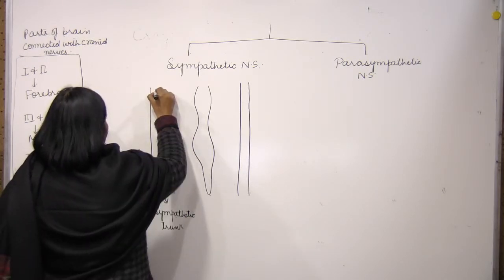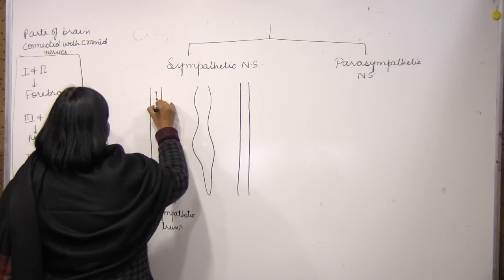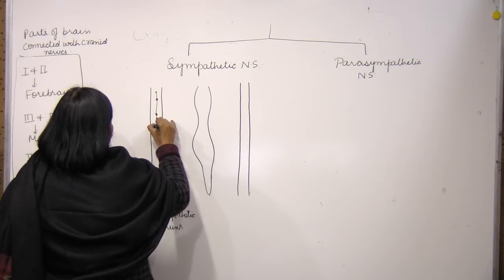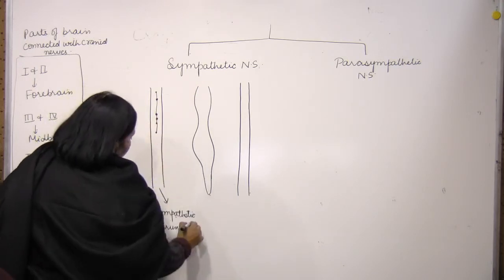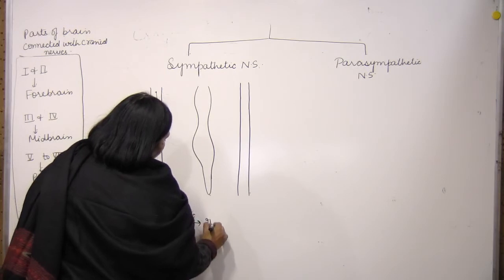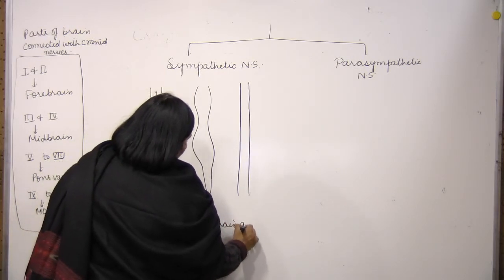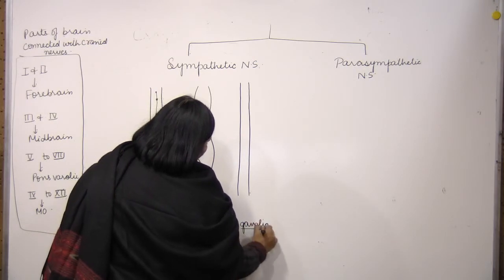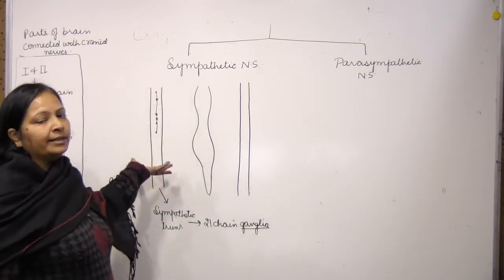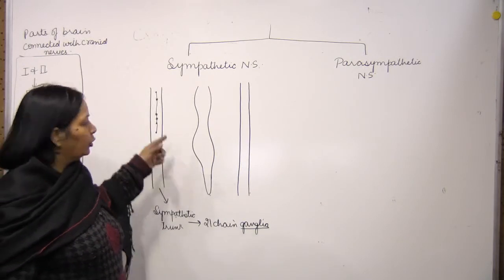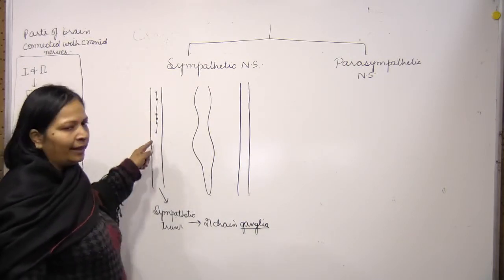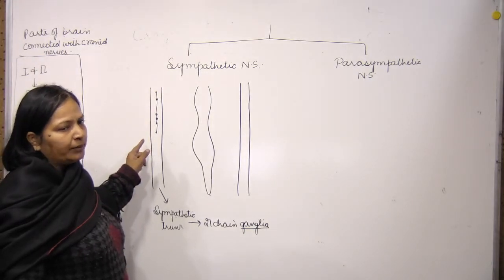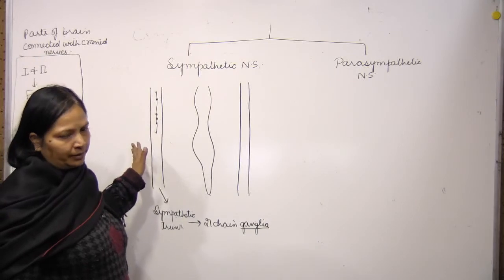There are sympathetic trunks. Each sympathetic trunk consists of 21 chain ganglia. And ganglia, you know what is ganglia? A group of cell bodies present outside the central nervous system.